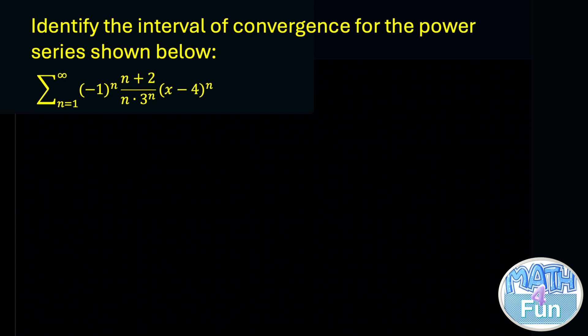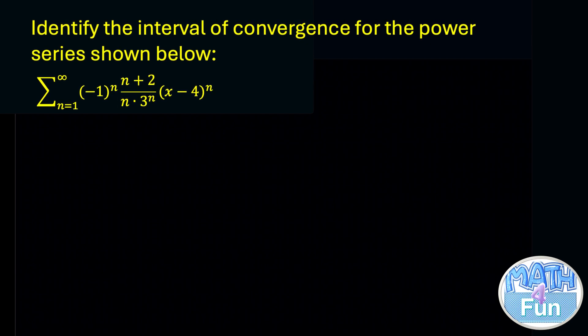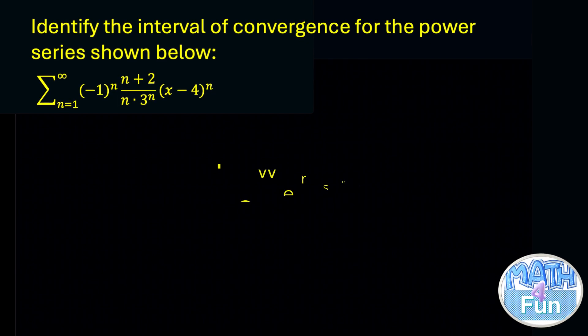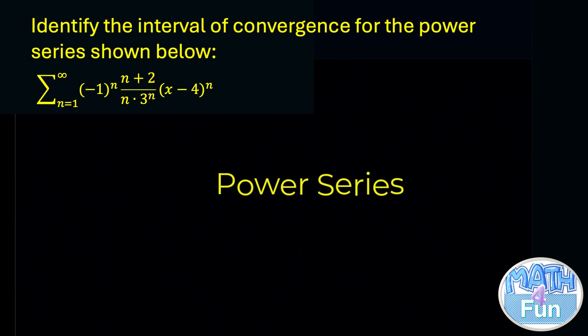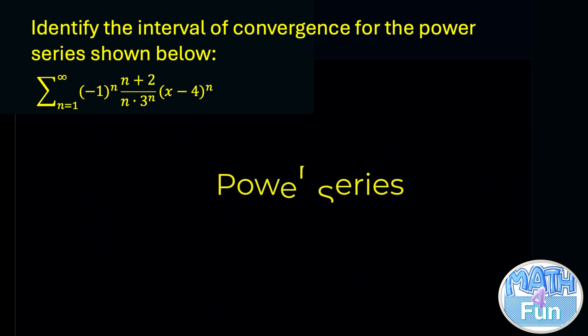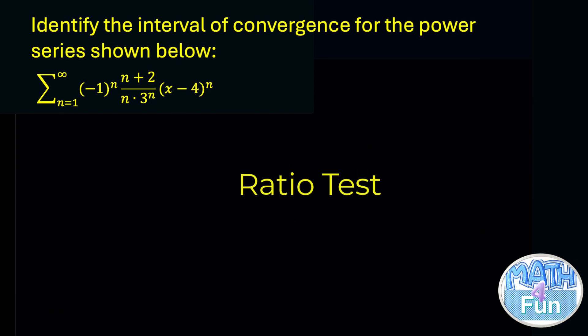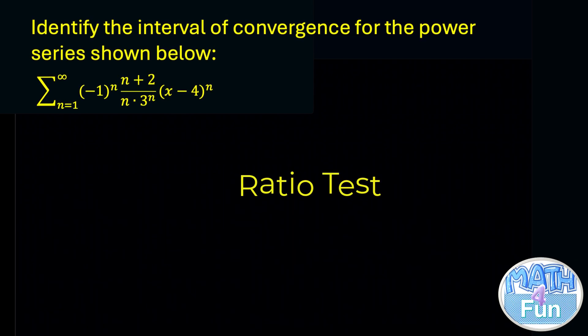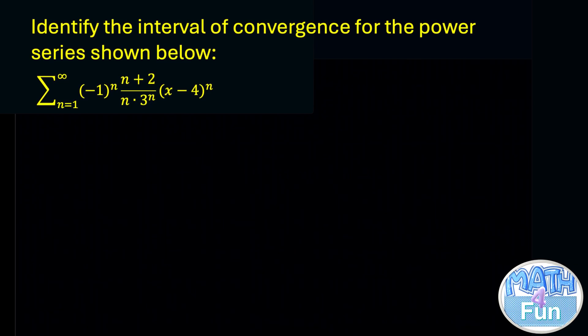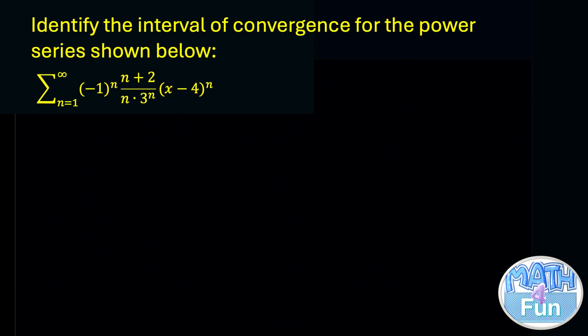Now to find the interval of convergence for the given power series — this is a power series, by the way — we can apply the ratio test. Do you remember it? Let's denote the general term of the series as a_n.